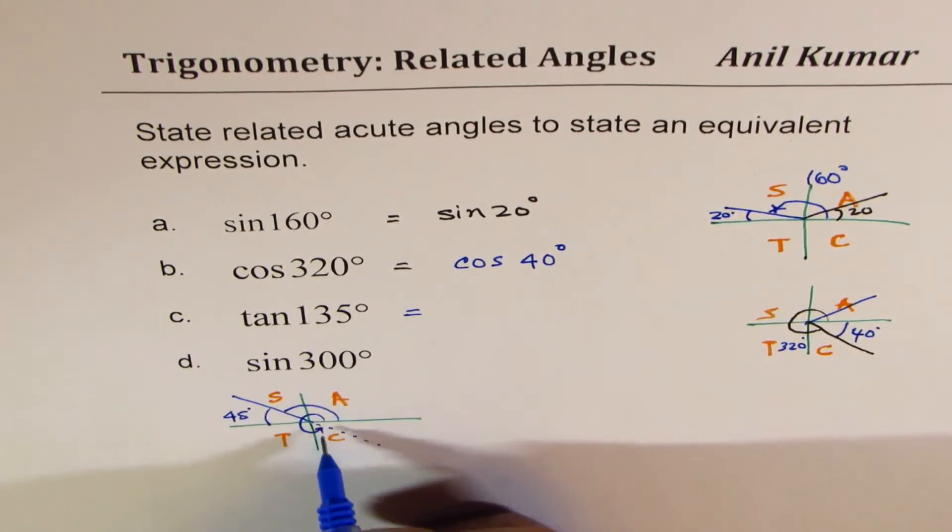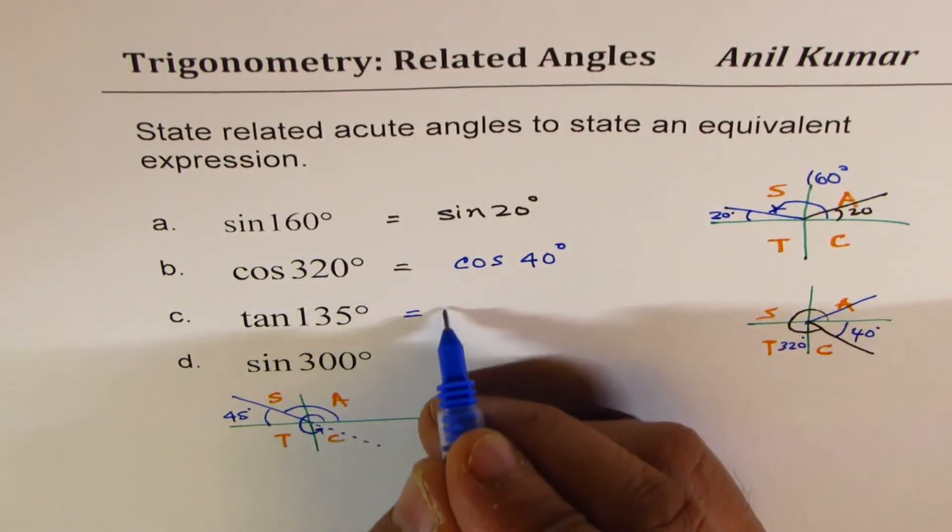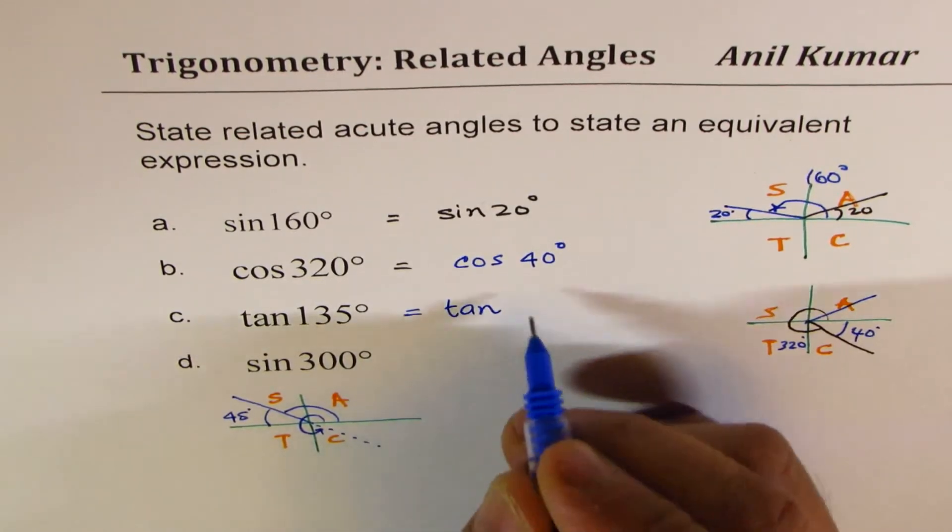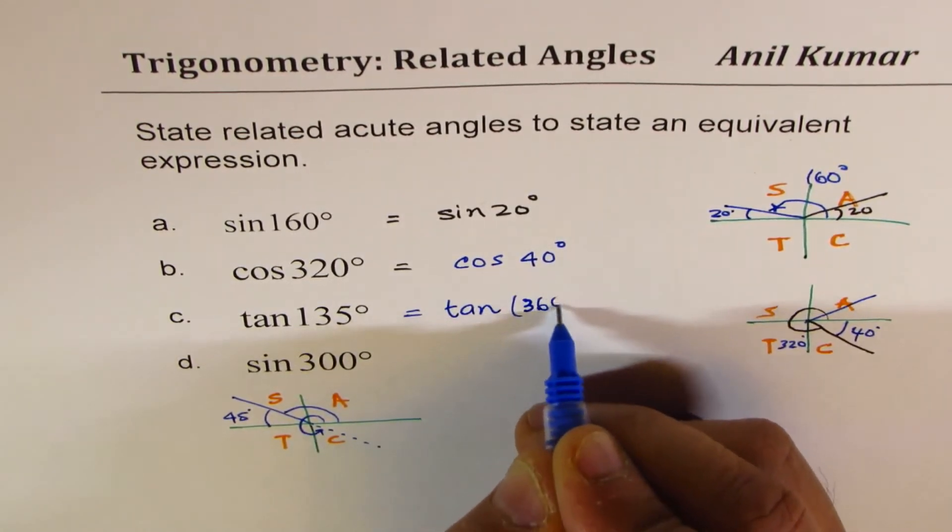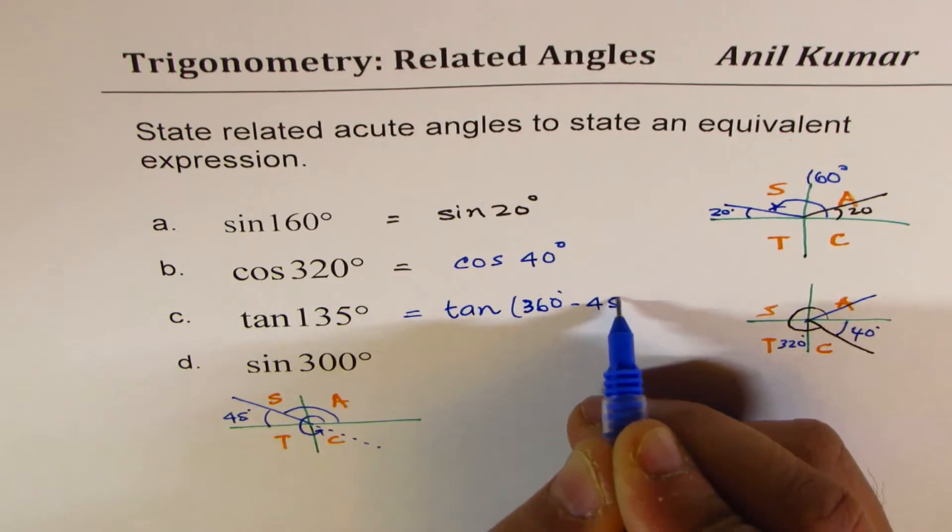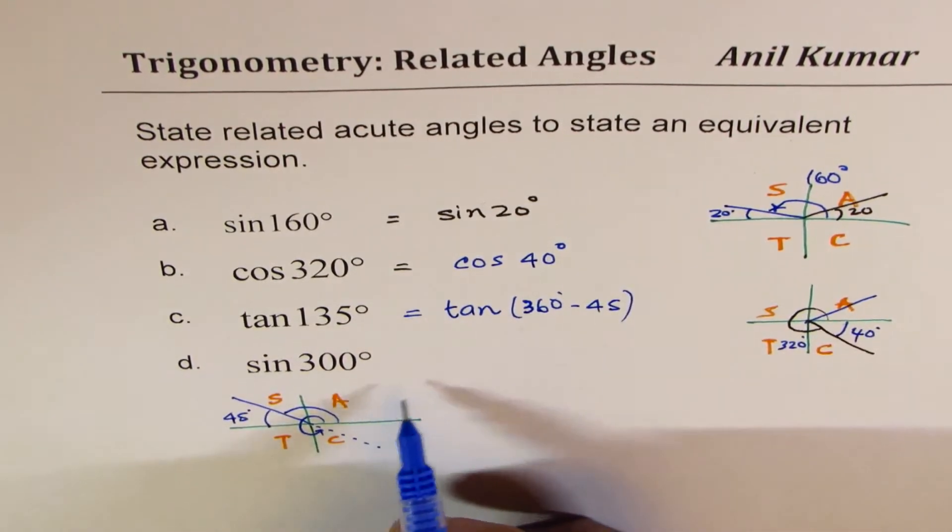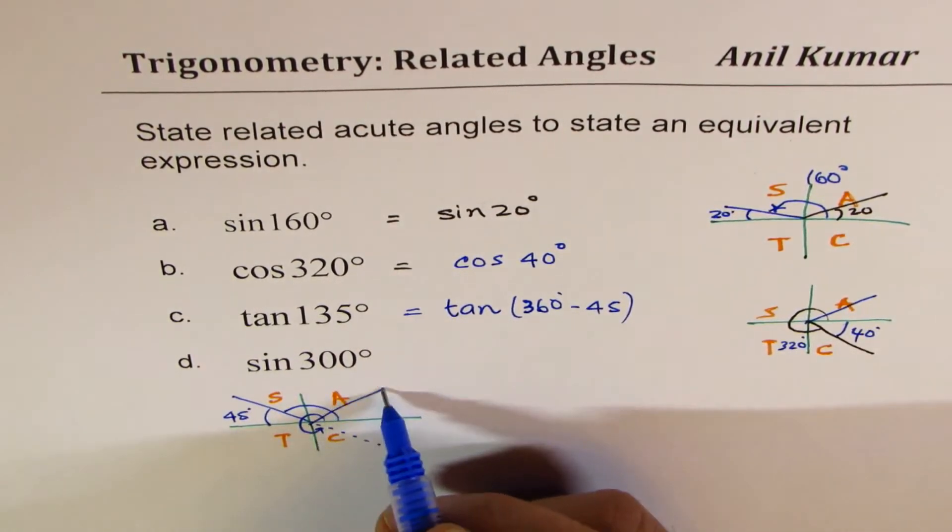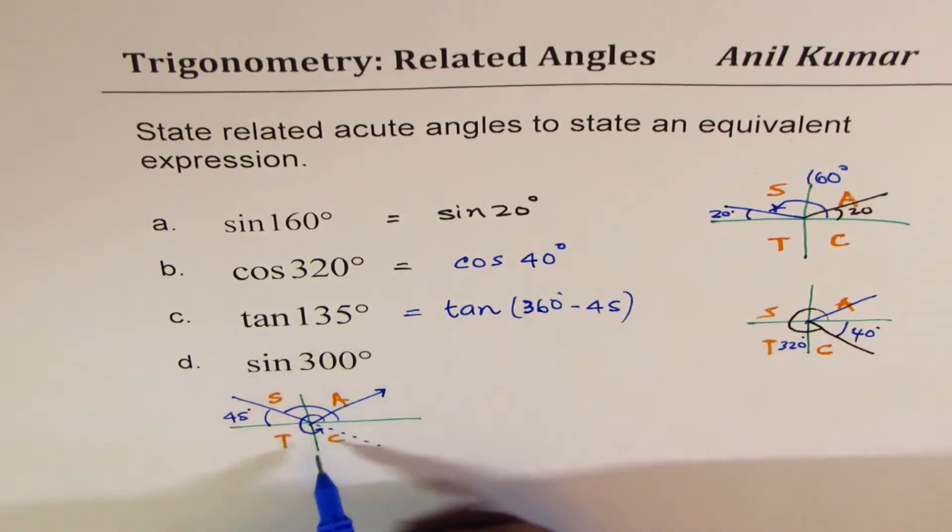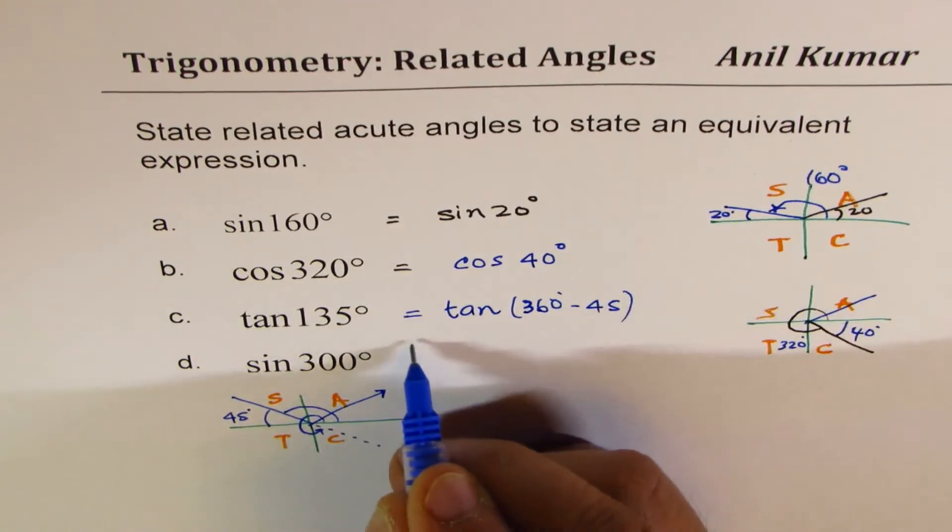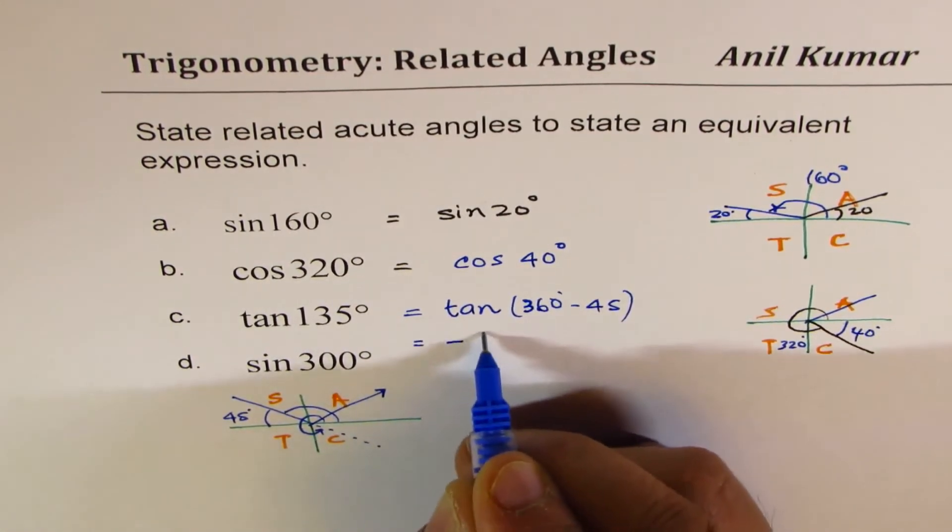So we could write this as an angle which is 45 less than 360, or tan of, let's say, 360 degrees minus 45. That is one way of thinking about it. In quadrant 1 it is positive, but we could write this as minus of tan 45 degrees.